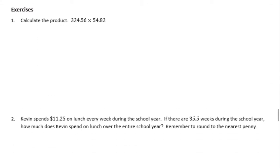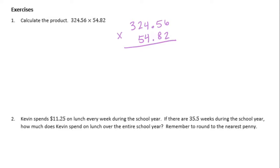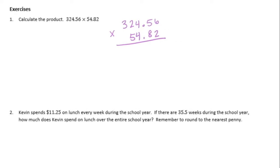Exercises. Number one: calculate the product. Three hundred twenty-four and fifty-six hundredths times fifty-four and eighty-two hundredths. It's going to be really important, since these are numbers with a lot of digits, that you keep all of the numbers lined up. If we don't have all our numbers lined up in the correct place values, then when we go to add, we might be adding the wrong numbers. Be careful and use grid paper if you need to.